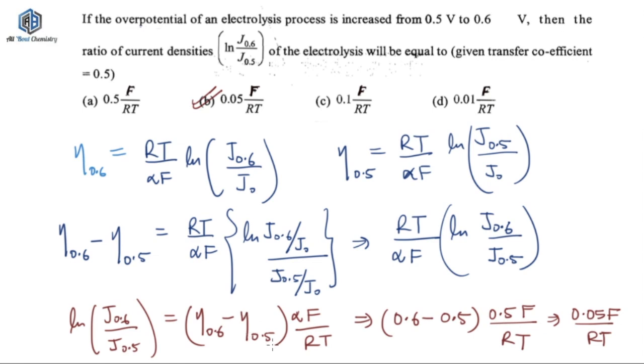So eta 0.6 minus eta 0.5, alpha F upon RT, put the values of eta 0.6, put the value of eta 0.5, alpha value is 0.5, F upon RT here. After solving this part, you will get 0.1. Once you multiply 0.1 with 0.5, you will get 0.05. So that's how you get option number B as the correct option. So this is how this question has to be done. And it was quite simple, yet it was asked from very different concept.